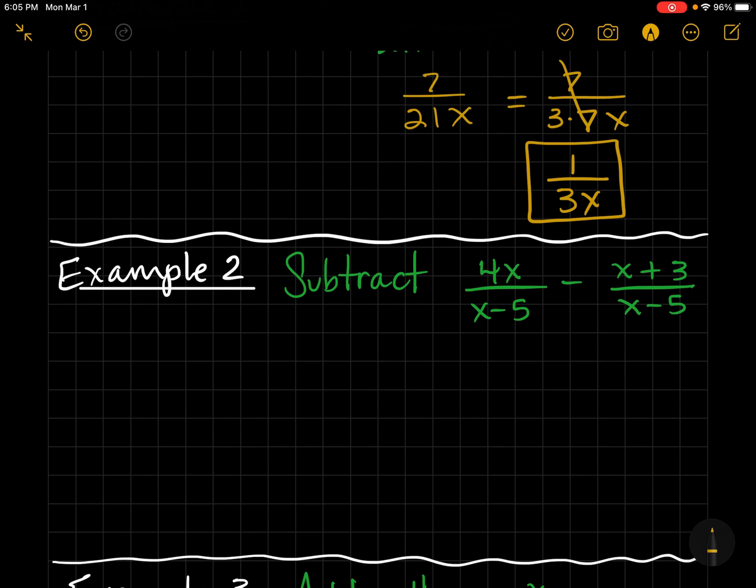Example 2. Here, we already have common denominators. So we're going to take this and combine them. So we get 4x minus x. But be careful that you distribute the negative sign. That's one thing you have to watch out for with subtraction. And now we're going to combine like terms.